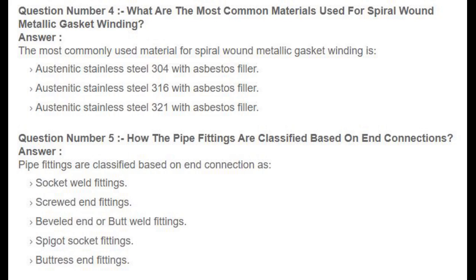Question number 4: What are the most common materials used for spiral wound metallic gasket winding? Answer: The most commonly used materials for spiral wound metallic gasket winding are austenitic stainless steel 304 with asbestos filler, austenitic stainless steel 316 with asbestos filler, and austenitic stainless steel 321 with asbestos filler.